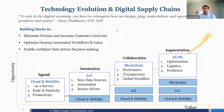SAP was a member of Digital Supply Chain Institute, and Hans was a great partner. A quick quote from Hans: 'To win in the digital economy, we have to re-imagine how we design, make, deliver, and operate our products and assets.' Technology is a critical building block to eliminate friction and increase customer centricity, because digital supply chain is all about a customer-centric platform model. It also helps to optimize human and automated workflows — one member is achieving 80% accuracy in order fulfillment without human interaction.